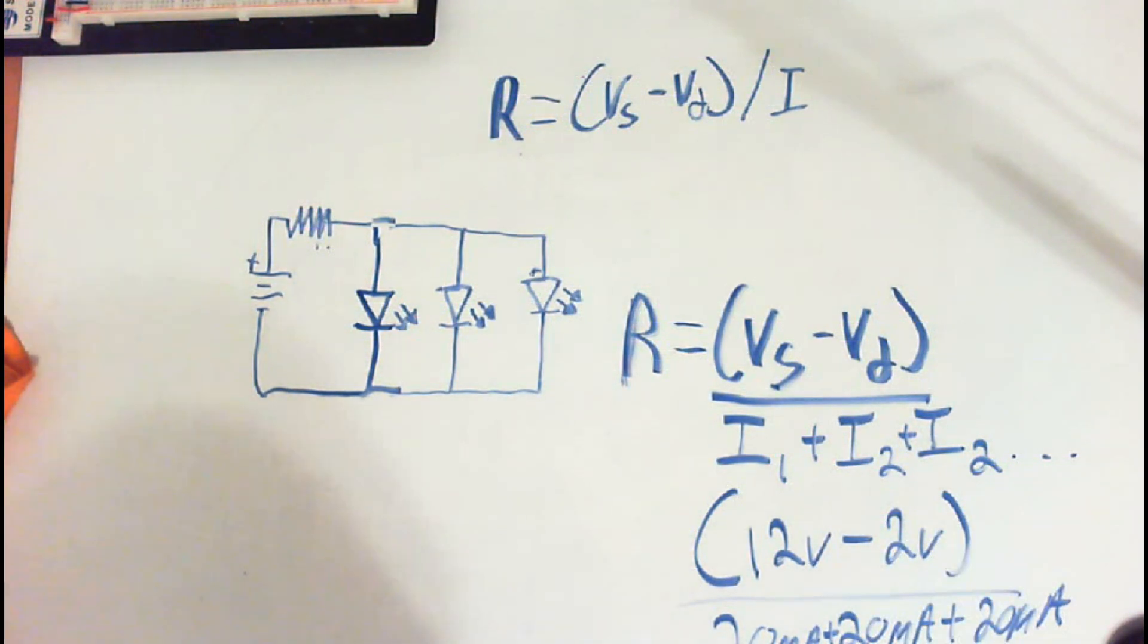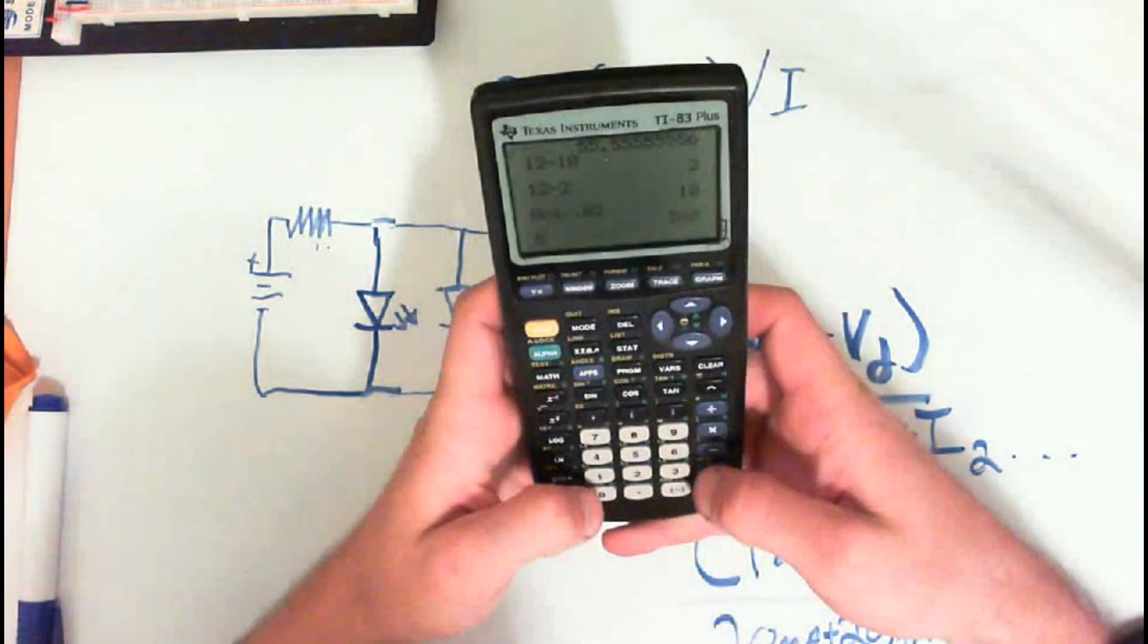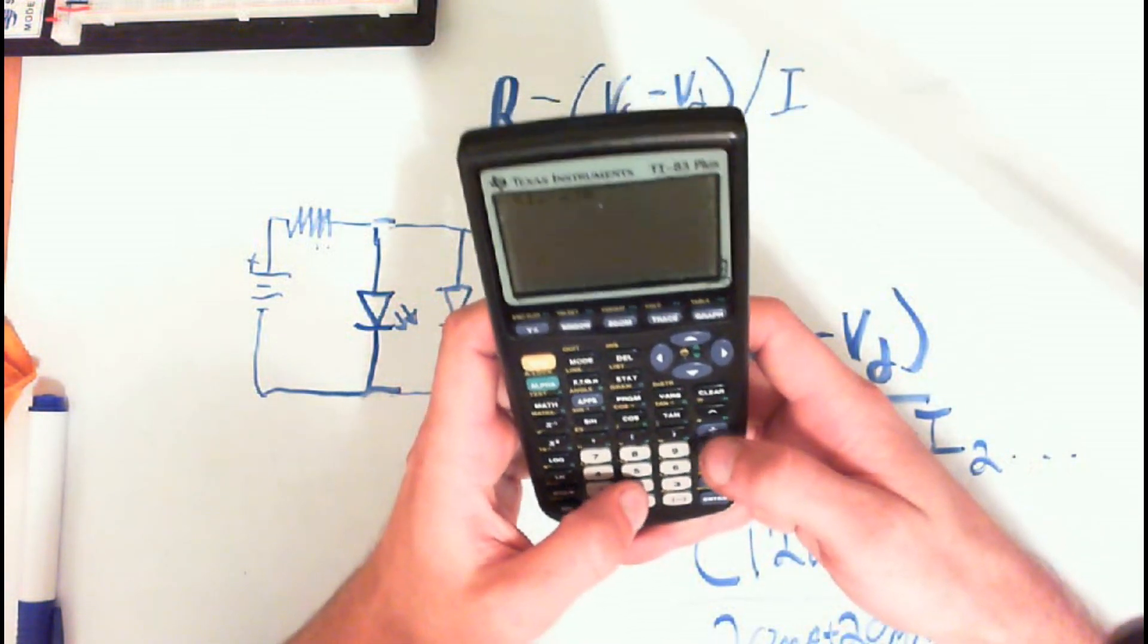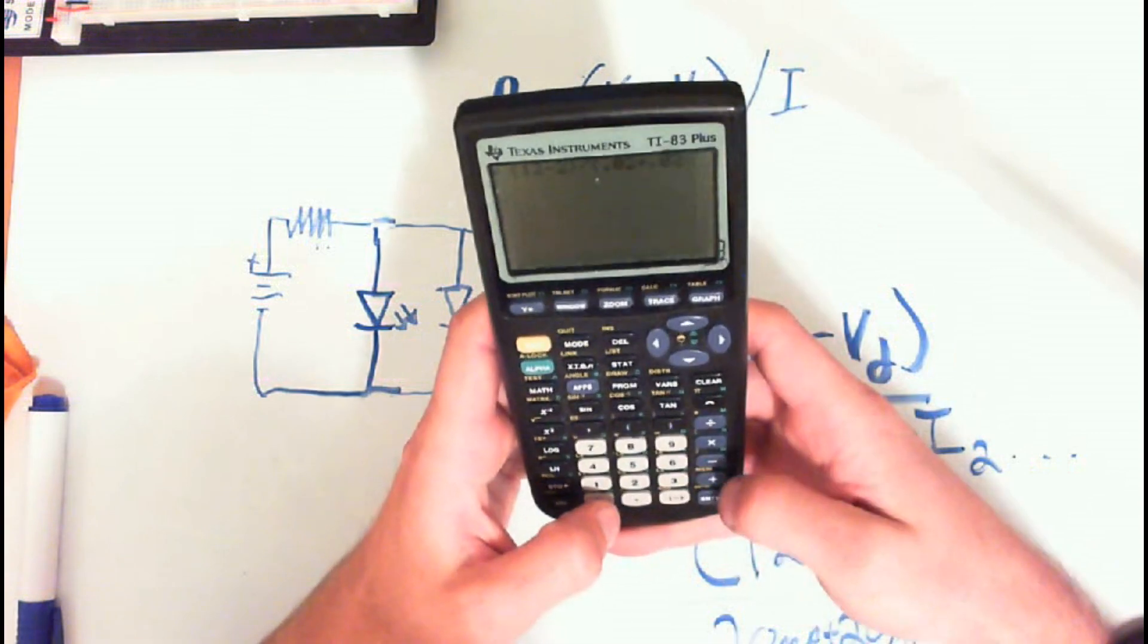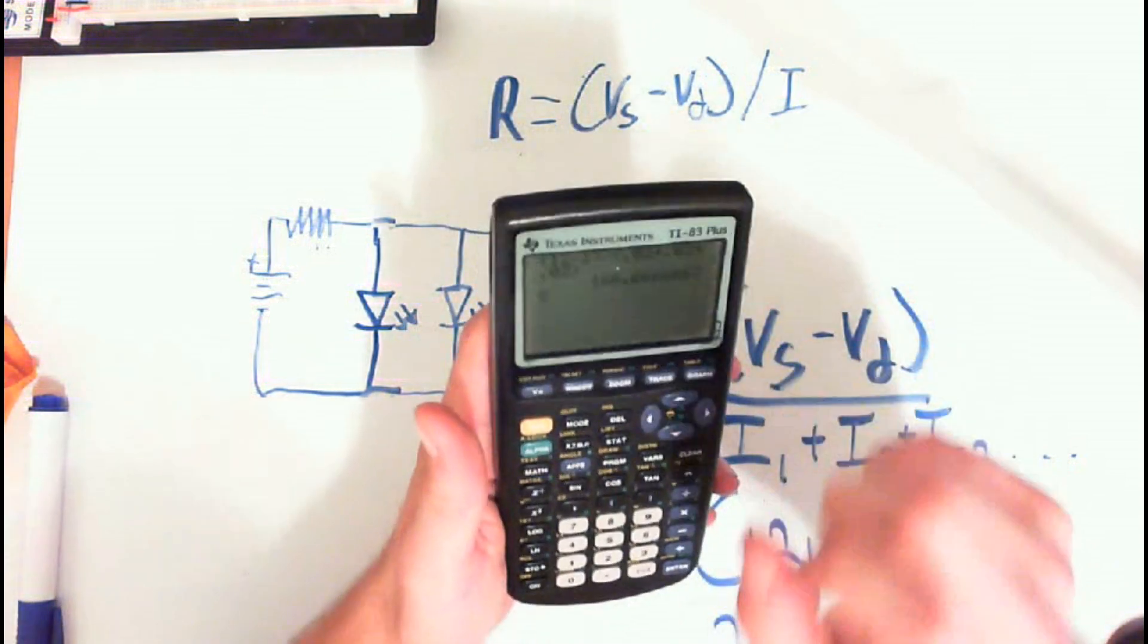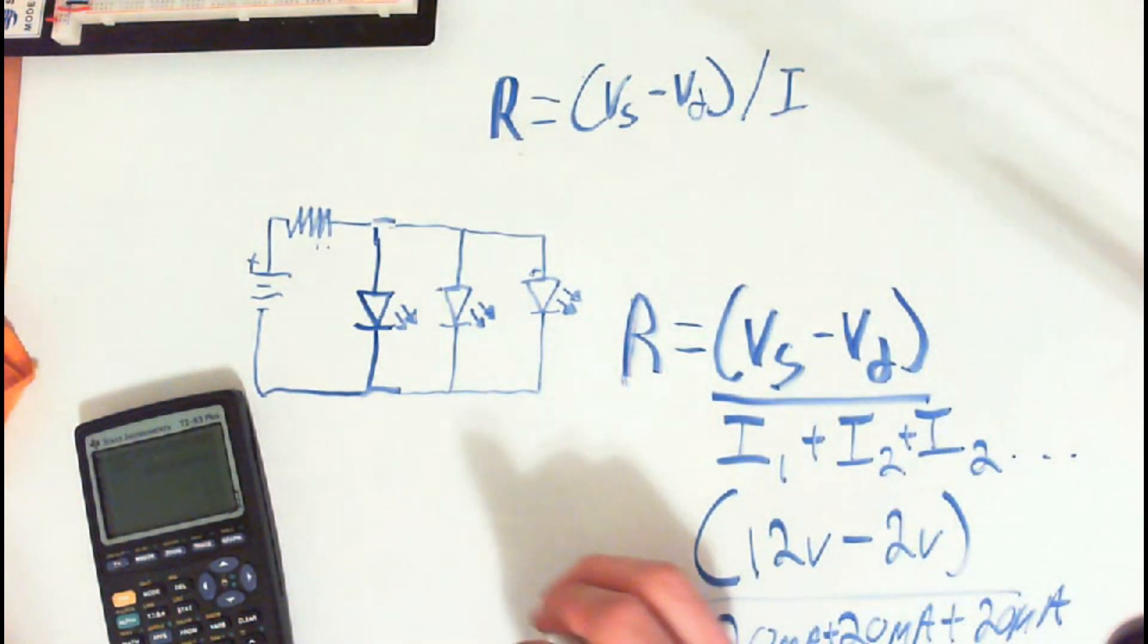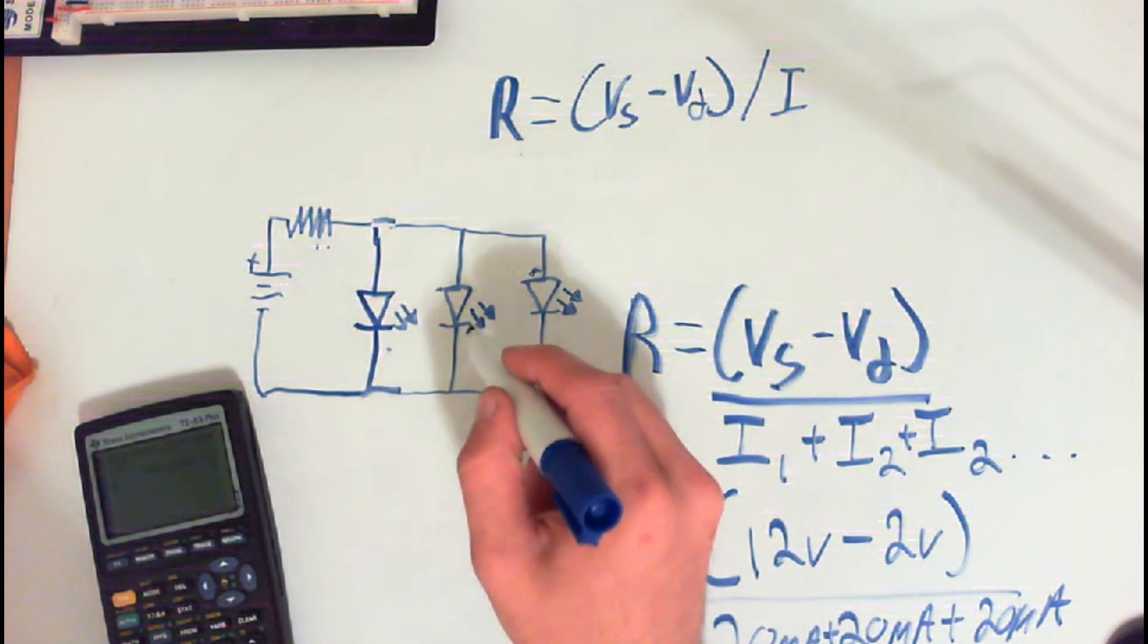So we're going to go ahead and show you this calculator. So it would be 12 subtract the 2 volts dropped, divided by, open parentheses, 0.02 plus 0.02 plus 0.02 plus 0.02. And our resistor value would be 166 volts. So the resistor needed would be 166. And that would provide 20 milliamps of power to each LED in this circuit.